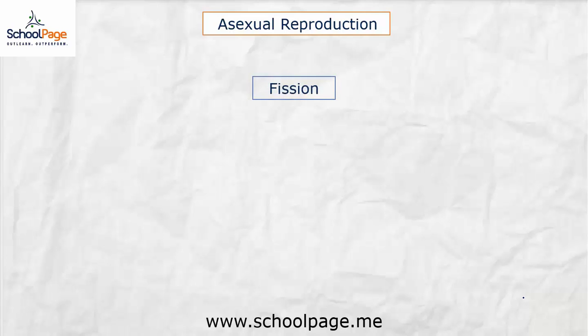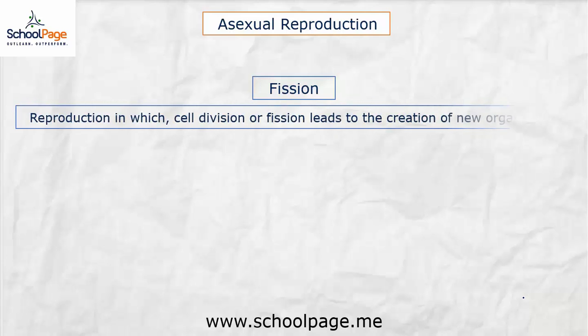Under asexual reproduction, the first kind we are going to study is fission. Fission is a kind of asexual reproduction in which cell division leads to the creation of a new organism. The classic example for this is amoeba. Now let us first see binary fission in amoeba.